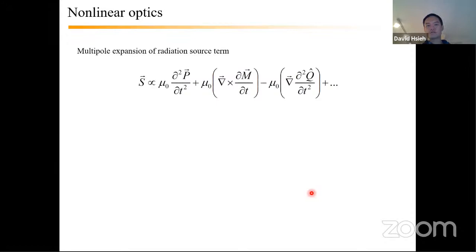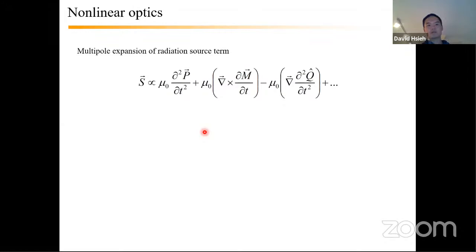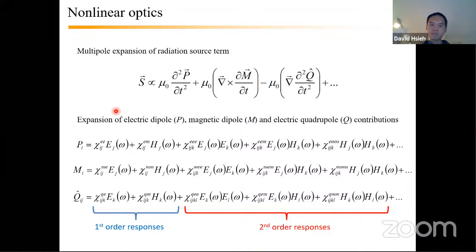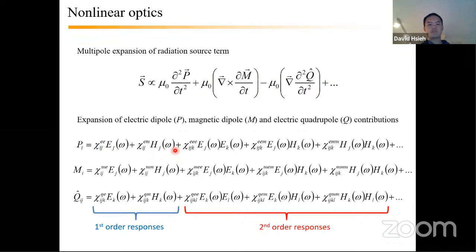Starting with an overview of SHG as a probe of magnetism: taking a multipole expansion of the source term to Maxwell's equations, one can have a leading-order electric dipole response followed by higher-order magnetic dipole and electric quadrupole responses. These oscillating multipoles are generated by an external light field impinging on the sample carrying electric and magnetic fields at frequency omega. Most familiar responses are linear responses, first order in nature, coupling a single power of an incident field.